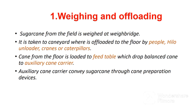The first stage of sugar cane processing is weighing and offloading. Sugar cane from the field is weighed at the weighbridge. It is then taken to the cane yard where it is offloaded to the floor by people, hilo unloader, cranes, or caterpillars. Sugar cane from the floor of the cane yard is loaded to the feed table, which drops balanced cane to the auxiliary cane carrier. The function of the auxiliary cane carrier is to convey sugar cane through cane preparation devices.